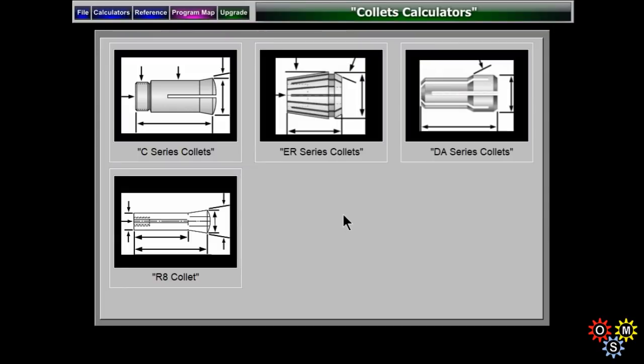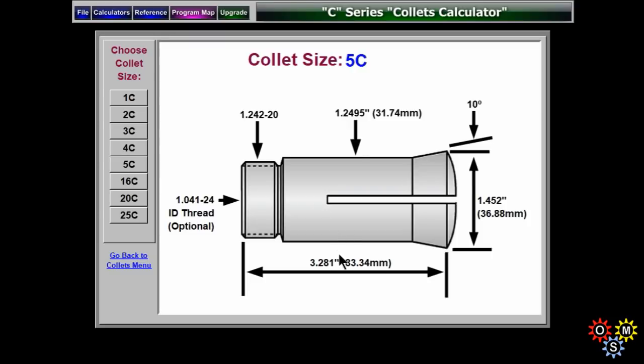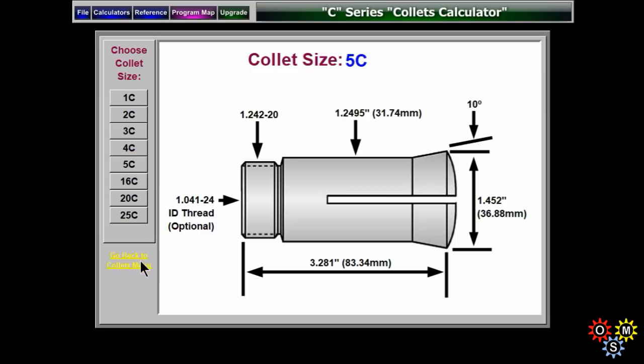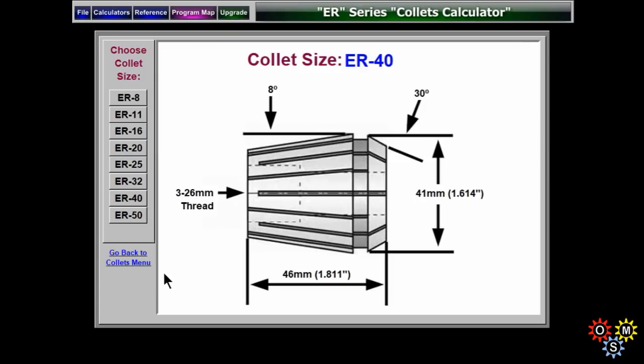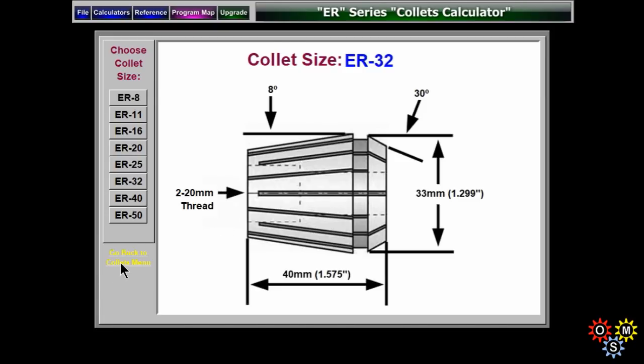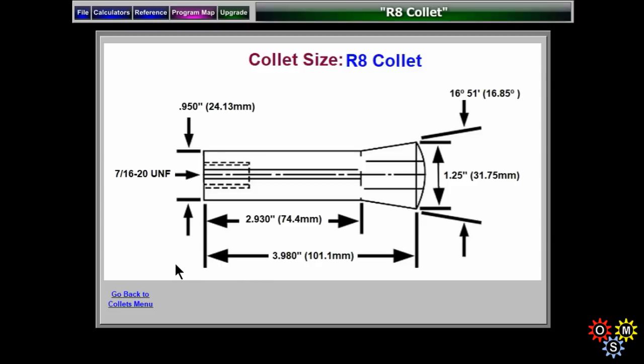Now, a look at collet calculators. Some of the more common types. And the C-series, 5C in particular. Probably something that many of us have in the shop. Useful dimensions if you're wanting to make a collet holder. And the ER series, very versatile. We go here, 40, 16, 32. Useful dimensions again. And finally, the R8 collet.